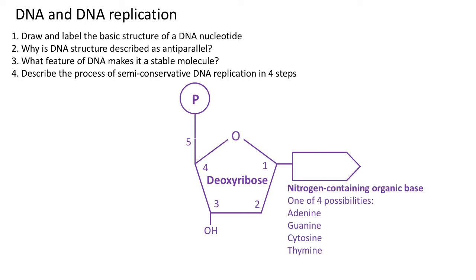On carbon one, there is the nitrogen-containing organic base, and that can be one of four possibilities: adenine, guanine, cytosine, or thymine.